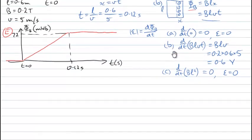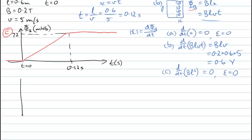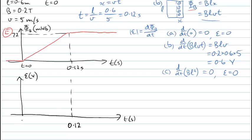Drawing the second graph — induced EMF in volts versus time in seconds — placed below the first. At negative times before the coil entered the field, the induced EMF was 0. At times after the coil is completely in the field, the induced EMF is again 0. But between t = 0 and t = 0.12 s, during which the coil is entering the field, the EMF is at a constant value of 0.6 volts.